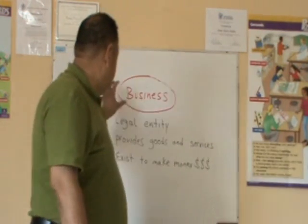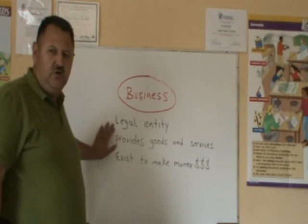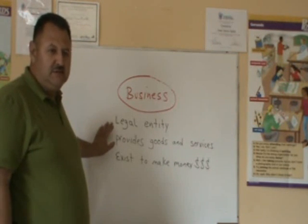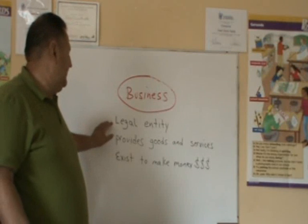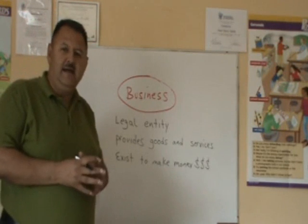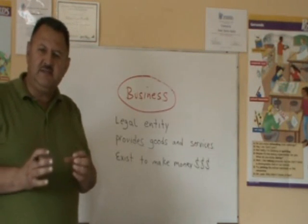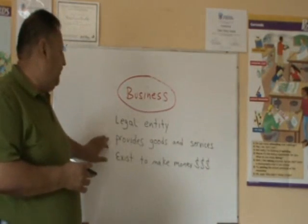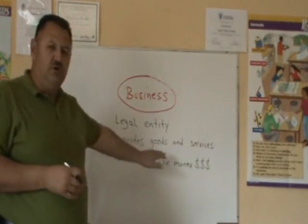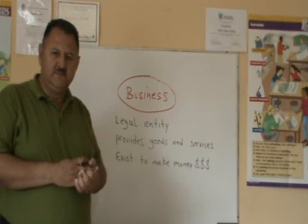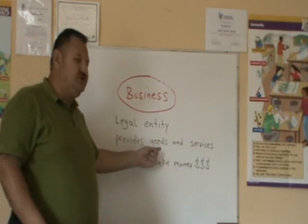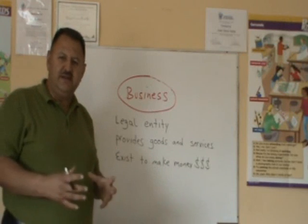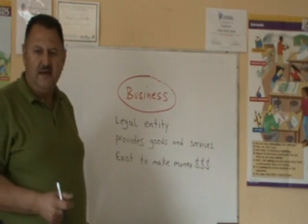A business is a legal entity, which means that it has its rights and obligations. It provides goods and services. Goods are material things, things you can touch, feel, and consume.